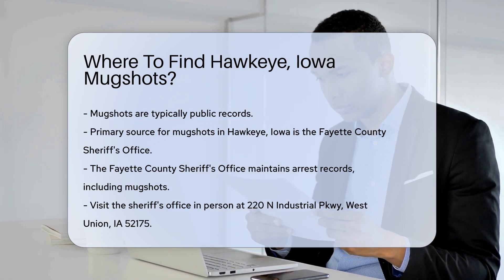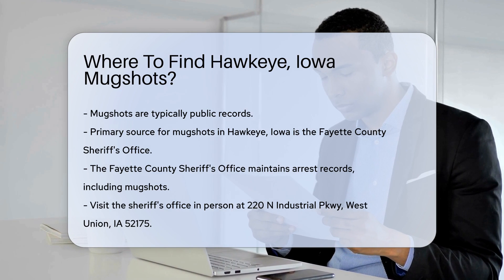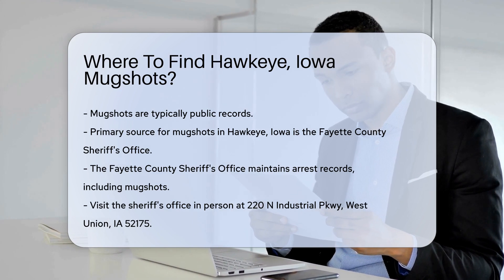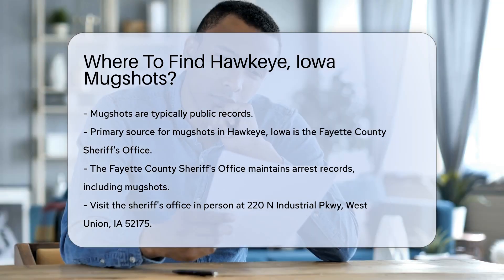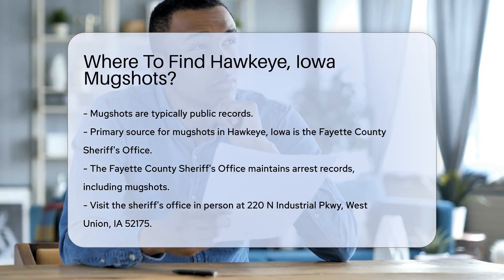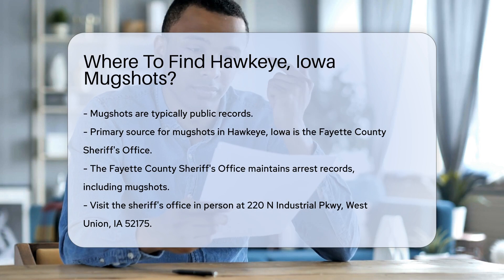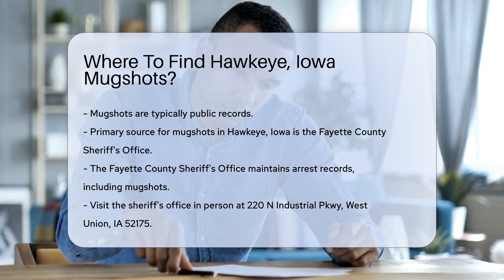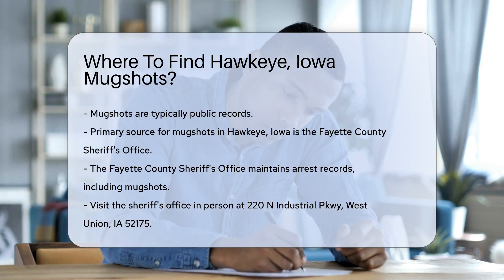The primary source is the local county sheriff's office. In Hawkeye, this would be the Fayette County Sheriff's Office. They maintain arrest records, including mugshots.